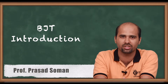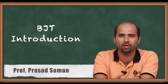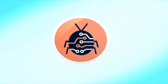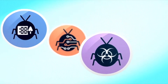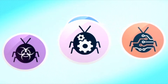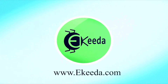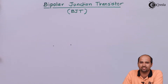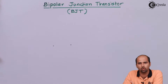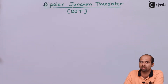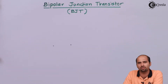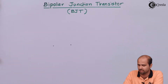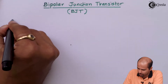We will address three questions: why BJT, what BJT, and how BJT. We have already discussed the PN junction diode, so with that foundation we will move towards the bipolar junction transistor. First of all we will learn the meaning of each word: bipolar, junction, and transistor.